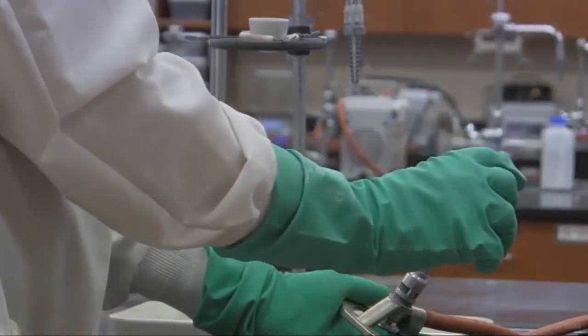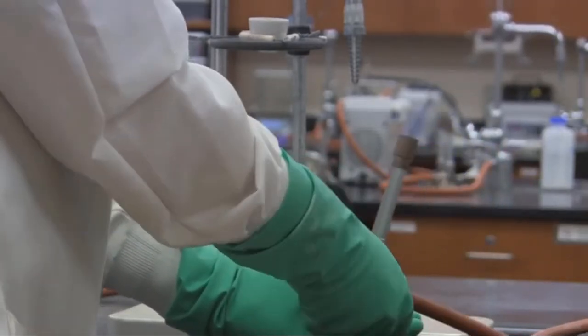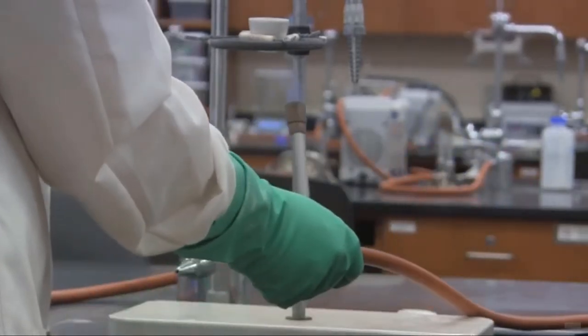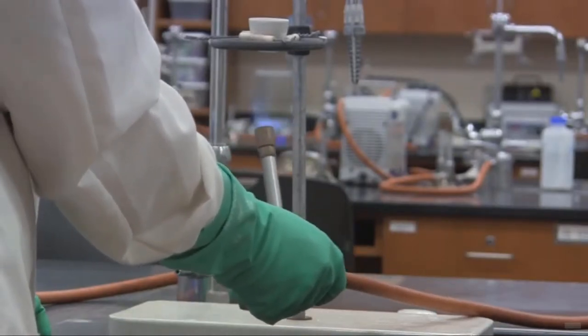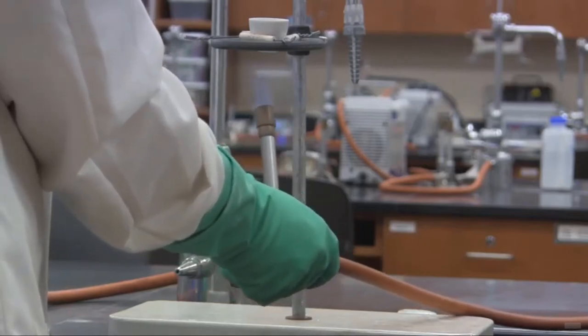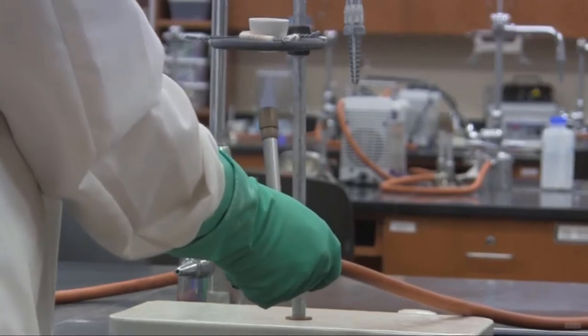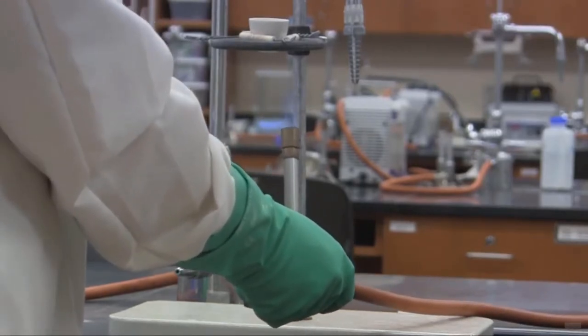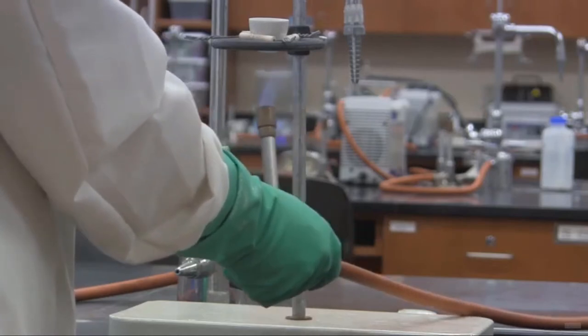And what we're going to do is we're going to take this flame and we're going to gently run underneath here. Now we don't want it completely on the flame. It's about four inches away. And I'm just going to continually do this. We do not want to overheat this because what can happen is that the copper chloride hydrate can turn into copper oxide. And that's not what we want.